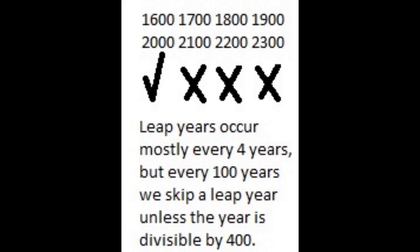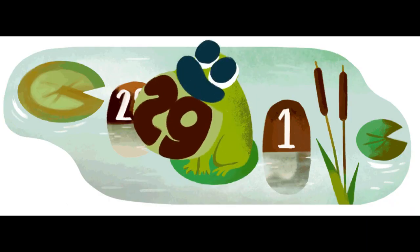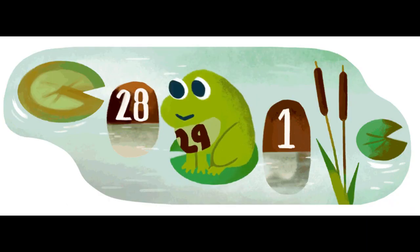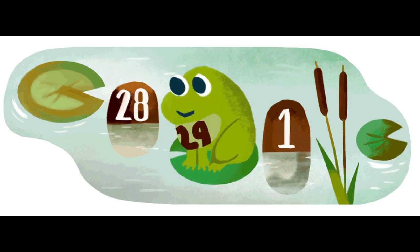Years divisible by four are leap years, except for years divisible by 100 but not by 400, which are not leap years. This adjusted system, known as the Gregorian calendar, provides a more accurate representation of the Earth's revolution than simply adding a leap year every four years. It helps keep our seasons and the calendar roughly aligned over longer periods.